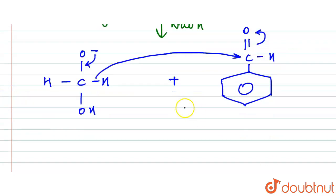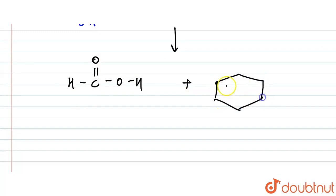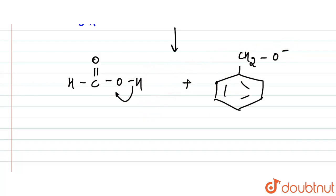In the next step, we have HC double bond O with OH. Then we get CH2 with O minus. This O minus then interacts with the hydrogen here, completing the hydride transfer step of the mechanism.